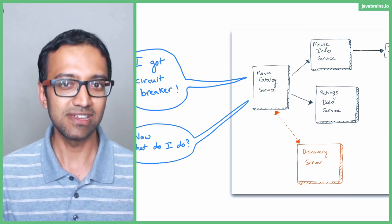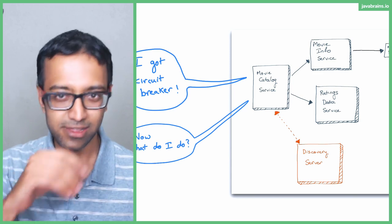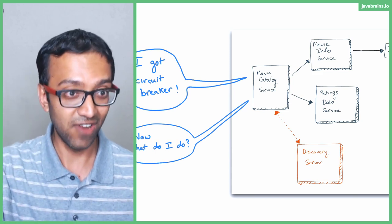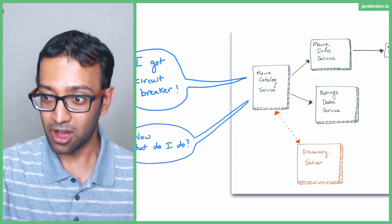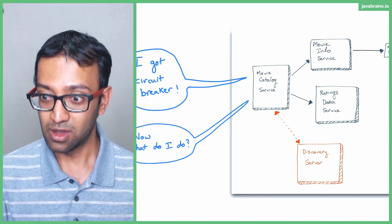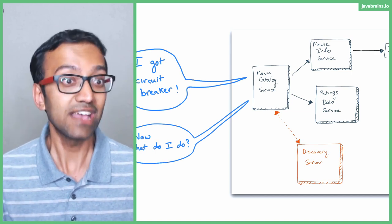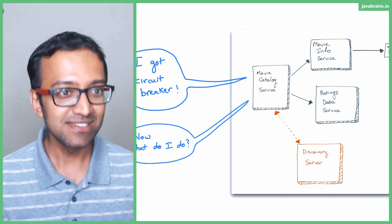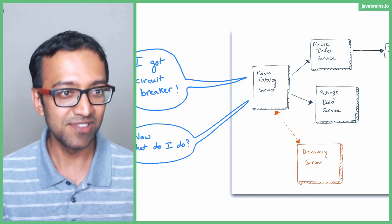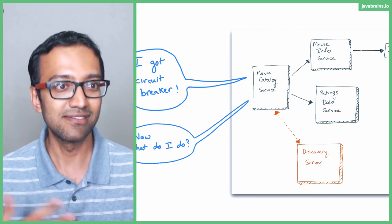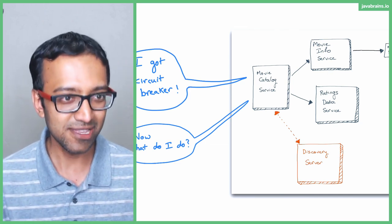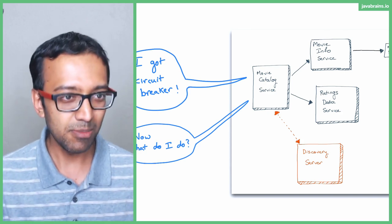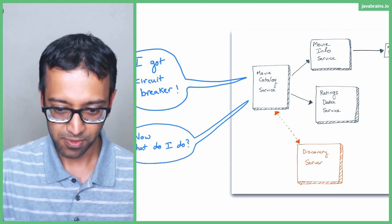Somebody comes and says make a call to that service. The microservice knows that service is not functioning, so you don't want to be making that call. It has to do something else - it has to send back something. If it doesn't send back something and it's waiting, we have the same problem: it's consuming a thread. So you have to send back something without calling the problematic microservice.